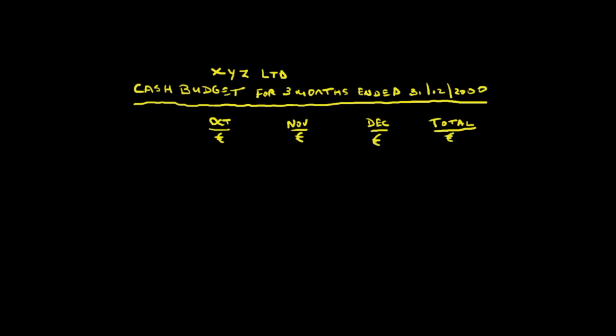This cash budget itself is also in three parts. The first part of our cash budget is very simple — cash in. So what cash are we going to get in? What sources of cash do we have? If you look back at the limited information we collected about our business, there are really only two sources of cash.